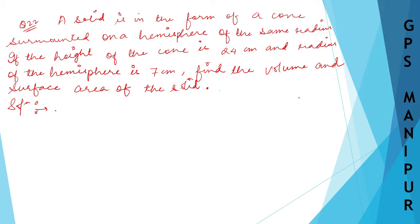What does it mean? There is a cone surmounted on a hemisphere, meaning the cone sits on top of the hemisphere. Hemisphere means half of a sphere.